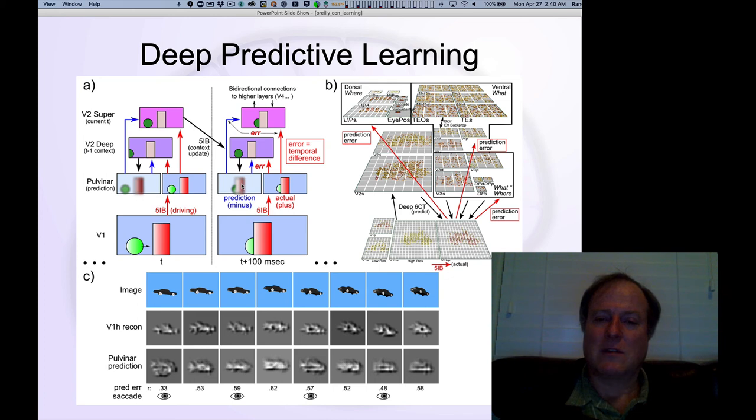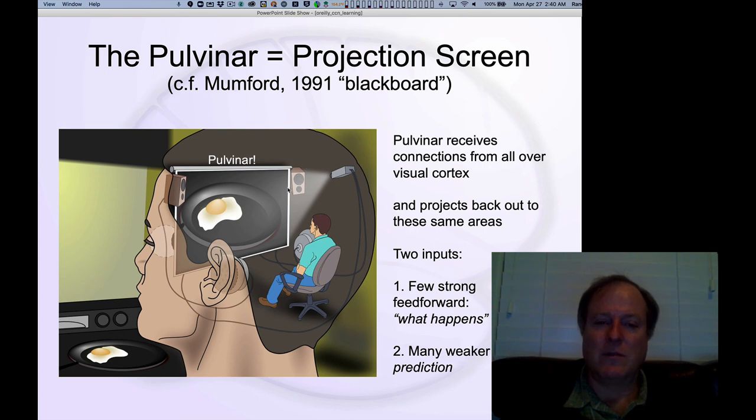And again, the top-down predictions are coming not only from the immediate areas that are being directly connected with these bottom-up areas, but actually we think there's a large convergence of top-down signals coming from a lot of different areas that help contribute to the prediction. And then all of those areas also receive a reciprocal projection back up from the pulvinar. And in fact, the pulvinar is one of the most widely connected areas in the brain. And so it really is well situated to play this role of this projection screen.